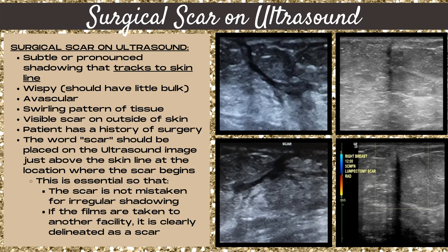First, let's talk about surgical scars on ultrasound. On ultrasound, a surgical scar is going to be a subtle or pronounced area of shadowing that must track all the way up to the skin line. The scar should be wispy, should have little bulk, it should be avascular, and you may notice a swirling pattern of the tissue.